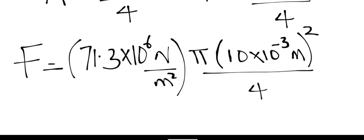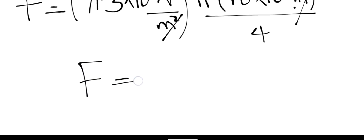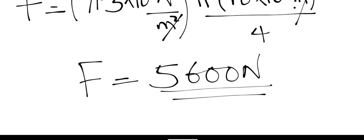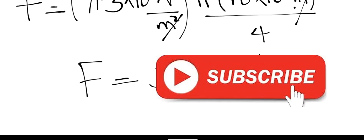When the diameter is squared, we get meters squared. The meter squared units cancel with the Pa (N/m²), leaving units of newtons — which is the unit of force. Inserting all values into the calculator gives a force of 5600 newtons. If you have any questions, drop them in the comment section, and if you haven't subscribed to the channel, please do so now.